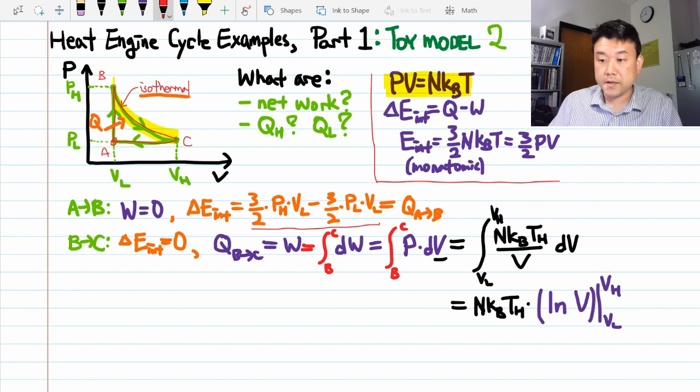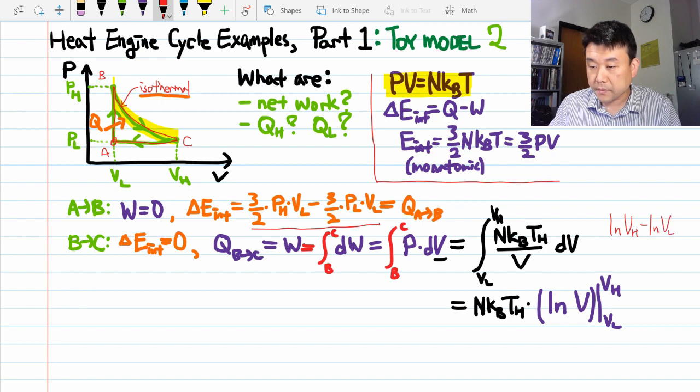Natural log of VH minus natural log of VL. And doing a little bit of logarithm algebra, we get natural log of VH over VL. As you will see later, that form is going to be more useful, so let me write that in instead.